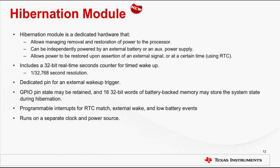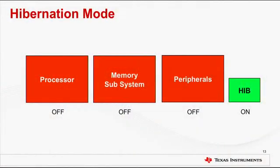While in hibernation mode, power to the core and other system peripherals can be restored upon assertion of an external signal or at a certain time using the real-time clock. As shown in the diagram, blocks shown in red indicate that the processor, memory subsystem, and peripherals are completely powered down, and only the hibernation module shown in green remains powered on from an external battery or power supply.